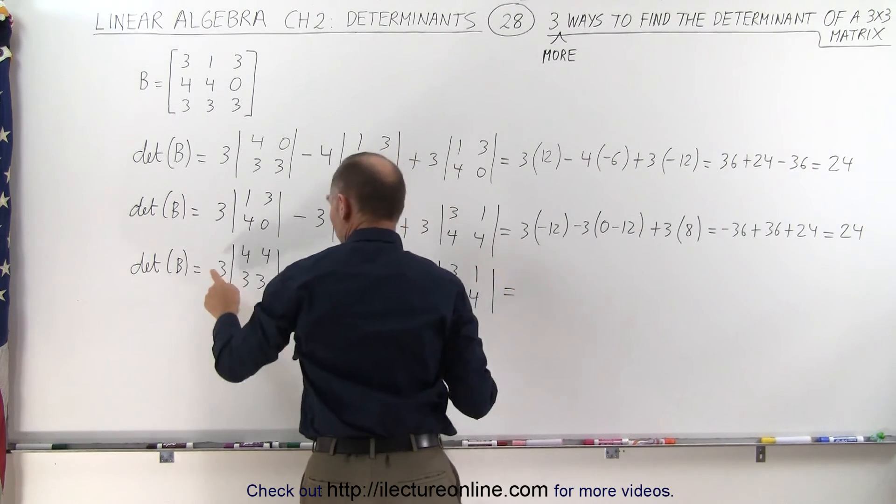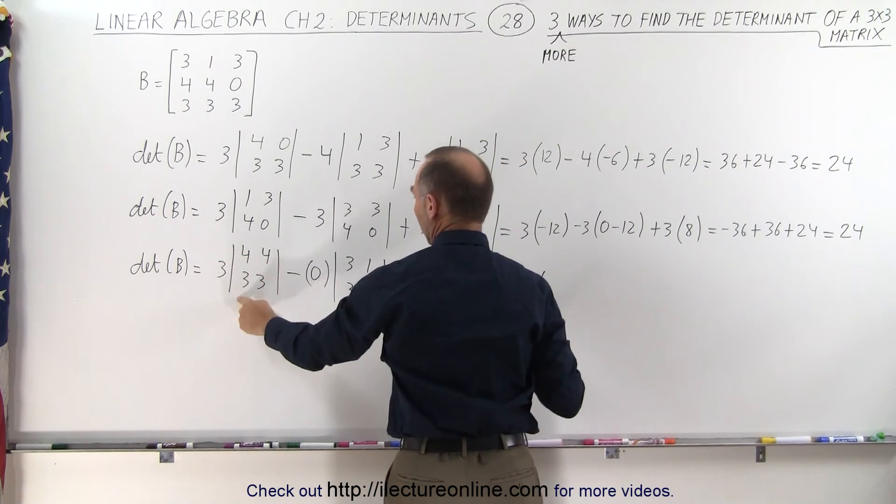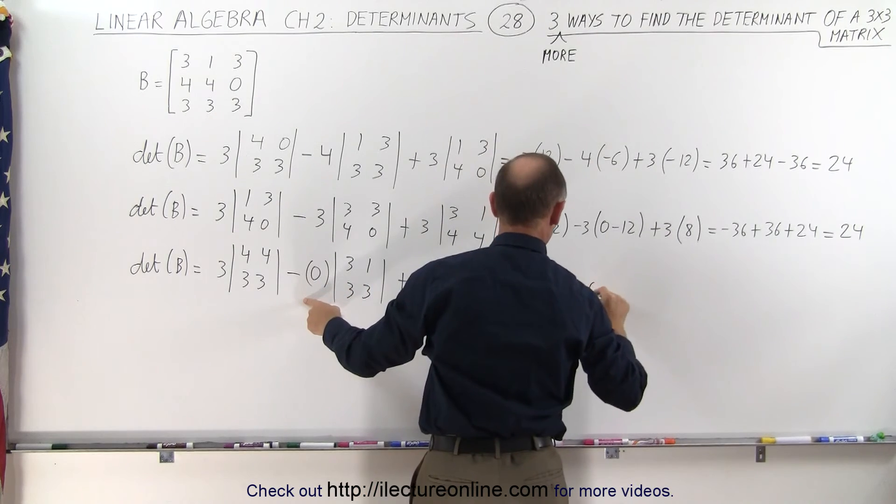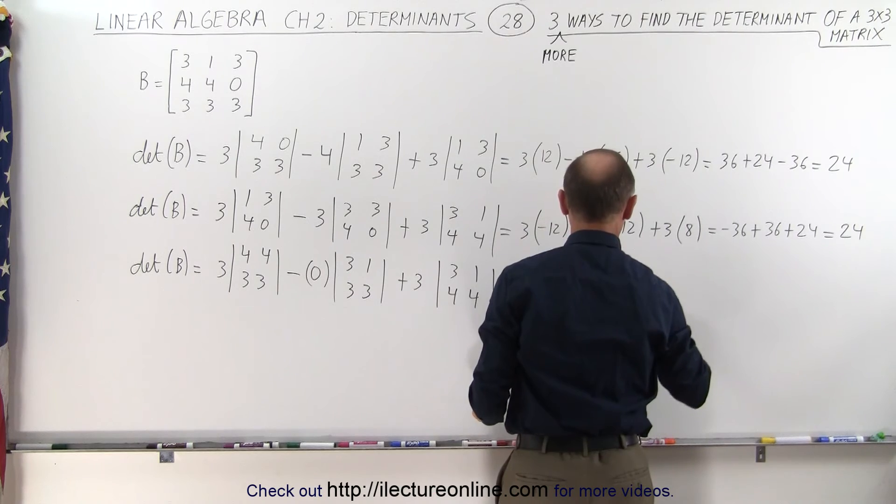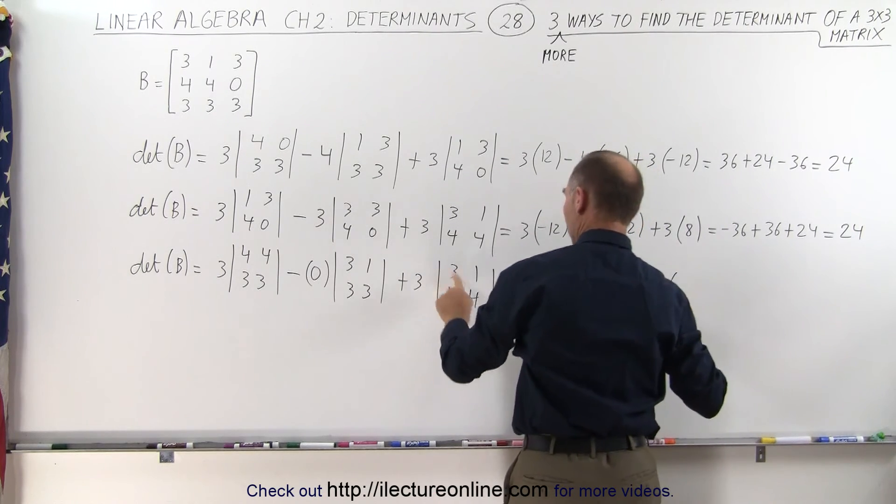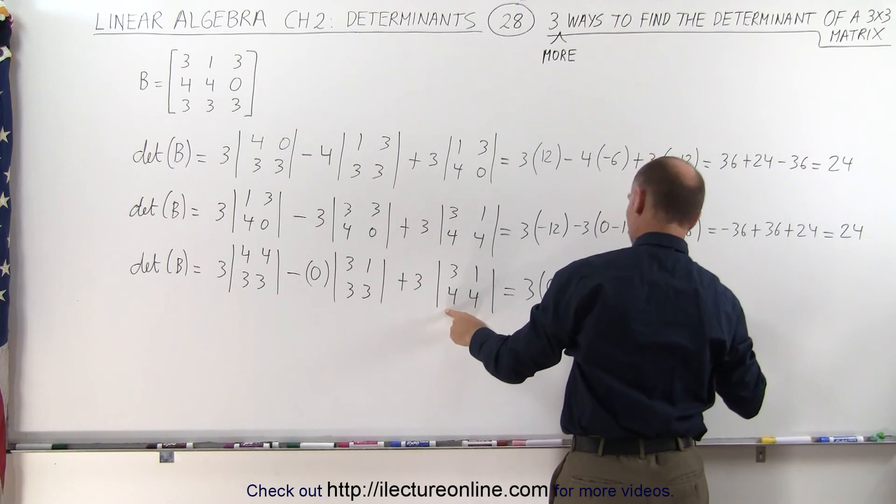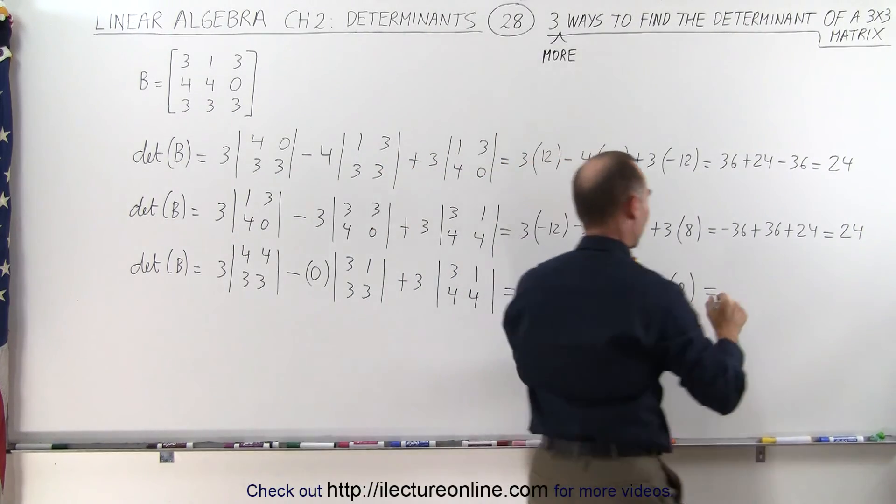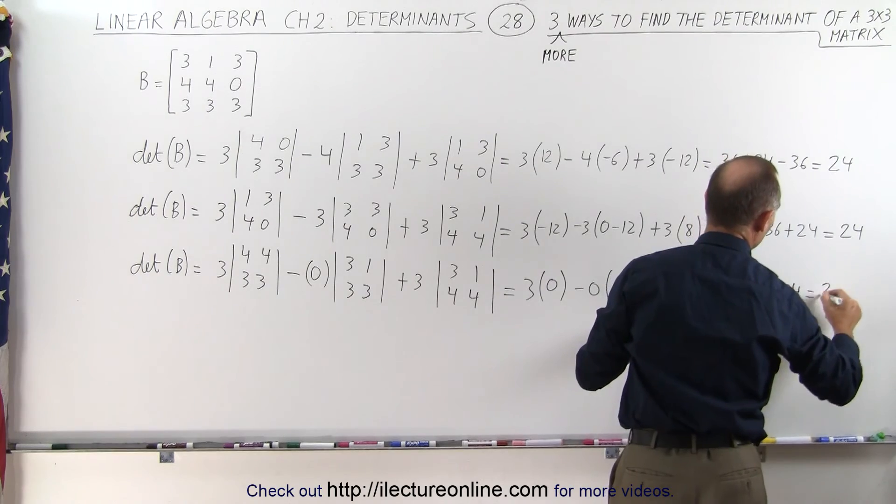And that should equal 3 times, that's 12 minus 12, which is 0. And that gives us minus 0 times, that's 9 minus 3, which is 6. And plus 3 times 12 minus 4, which is 8. 12 minus 4, which is 8, yes. And what does that give us? Well, it's 0 plus 0 plus 24, which is indeed, again, 24.